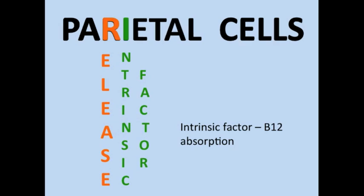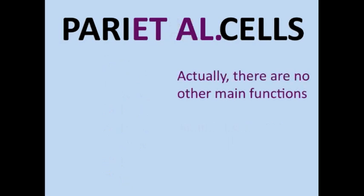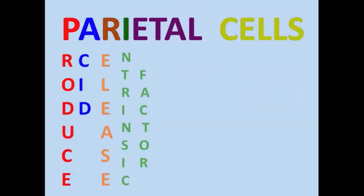And the final part of the mnemonic, et al, it's supposed to refer to the other functions of the parietal cells, which for all practical purposes is nothing really. So all you really need to know is that parietal cells produce acid and release intrinsic factor. The acid production is crucial for protein digestion, and the intrinsic factor is crucial for vitamin B12 absorption.